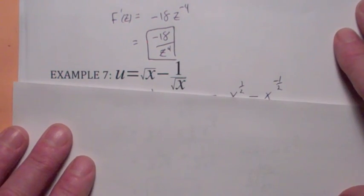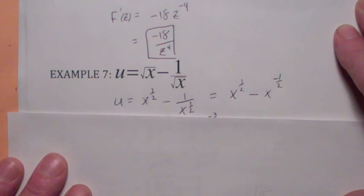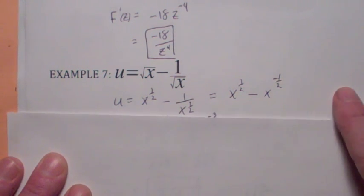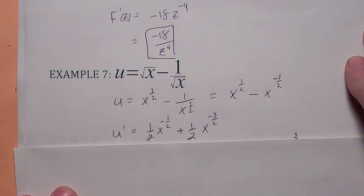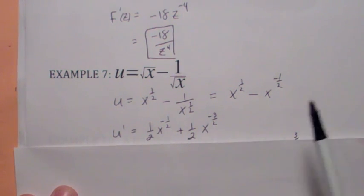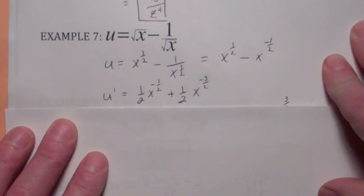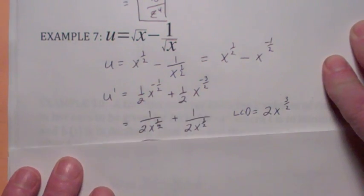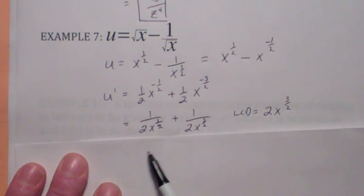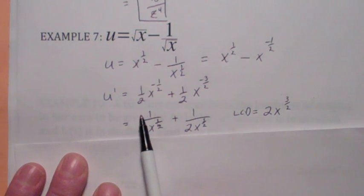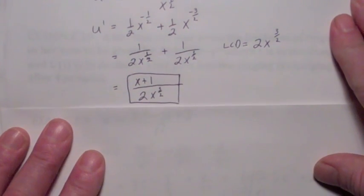This next one is kind of hard. Before you can differentiate it, you need to write it with fractional powers. When you move x to the 1/2 up, you get set up for the power rule. When you differentiate, you end up with 1/2 x to the negative 1/2 plus 1/2 x to the negative 3/2. When you get rid of the negative exponents, the LCD is 2 times x to the 3/2, so you multiply the top and bottom of the first term by x, giving a final answer of (x + 1) over 2x to the 3/2.